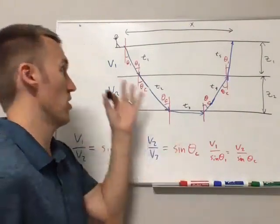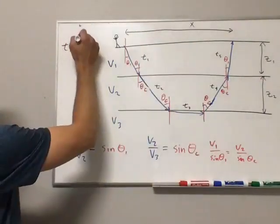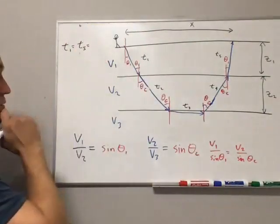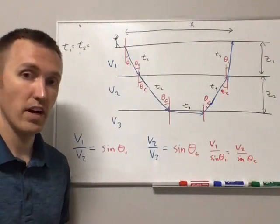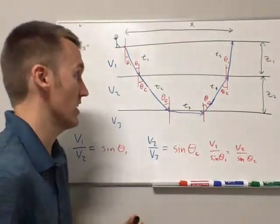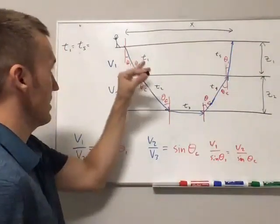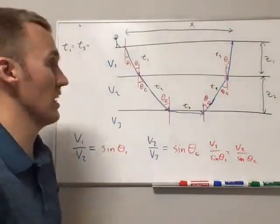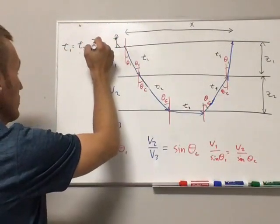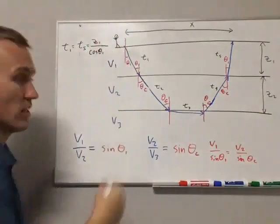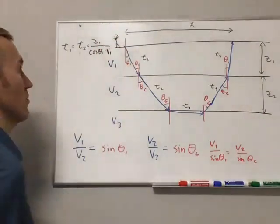The velocity of the ray through layer one is v1. So both t1 and t5, t1 equals t5 equals, and what did we say this was? It's the distance traveled divided by the velocity at which it's traveling. So the distance here is going to be z1, and then it's at this angle theta one, so adjacent to the theta, so that's the cosine. So it's going to be z1 over cosine of theta one, and then we need to also divide by the velocity so that the cosine theta one is going to be cosine theta one times z1. Okay.